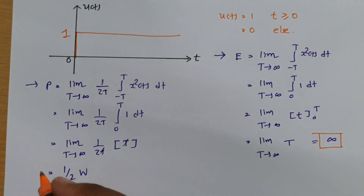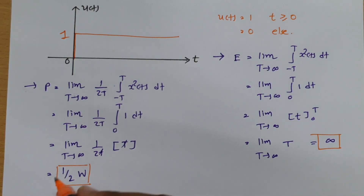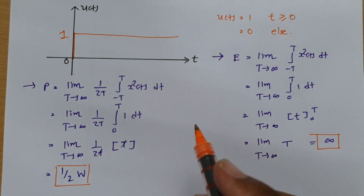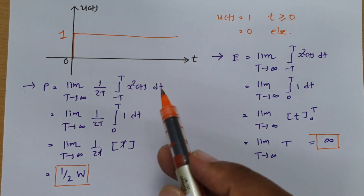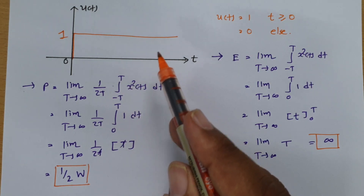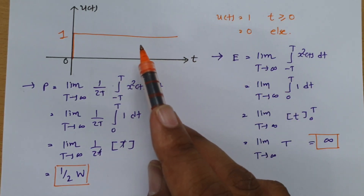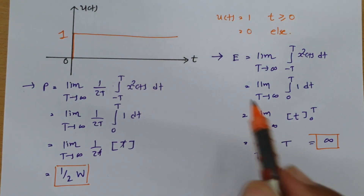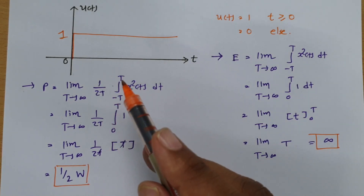So the power of the unit step signal is 1/2 watt and the energy is infinite. As a rule: if a signal is periodic, calculate power first; if it is not periodic, calculate energy first. Since the energy of the unit step is infinite, we calculated power and found it to be 1/2. Therefore, the unit step signal is a power signal.